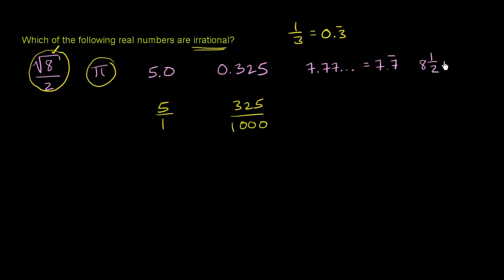8 and 1 half? Well, that's the same thing. 8 and 1 half is the same thing as 17 halves. So it's clearly rational. So the only two irrational numbers are the first two right over here.